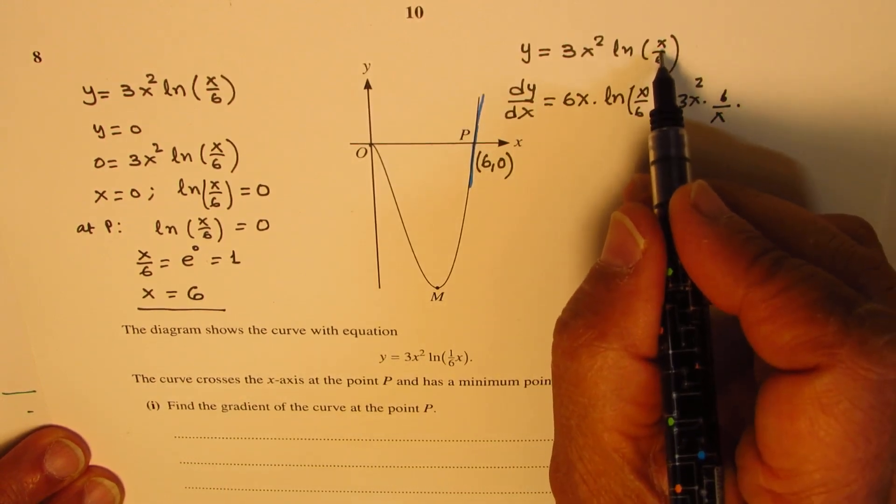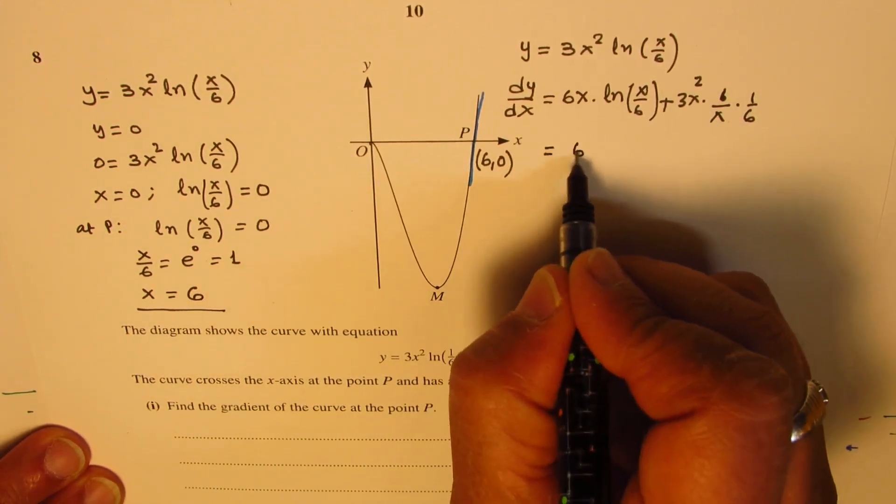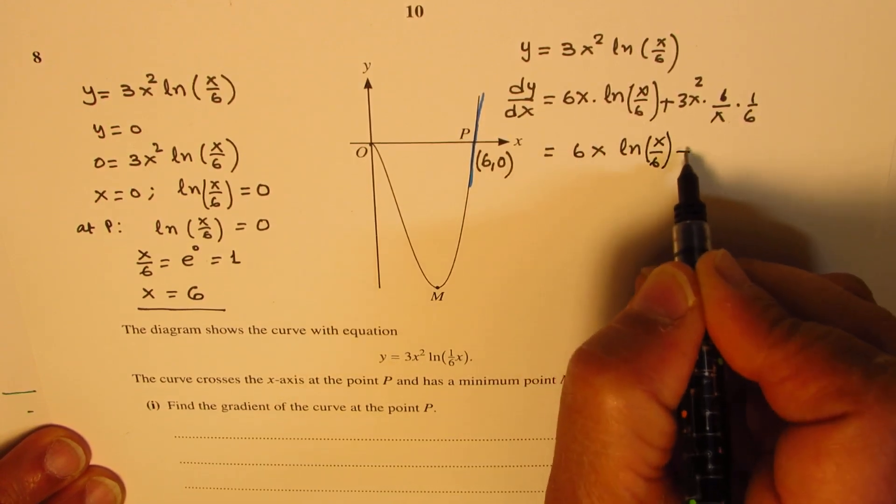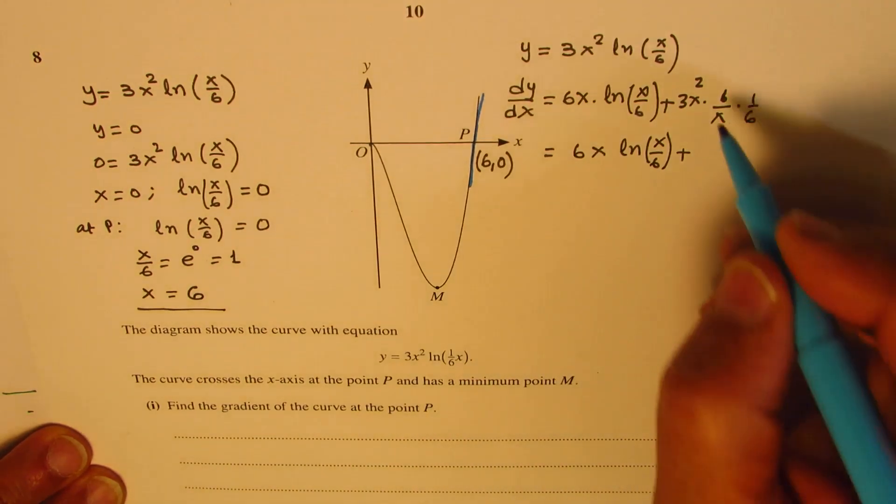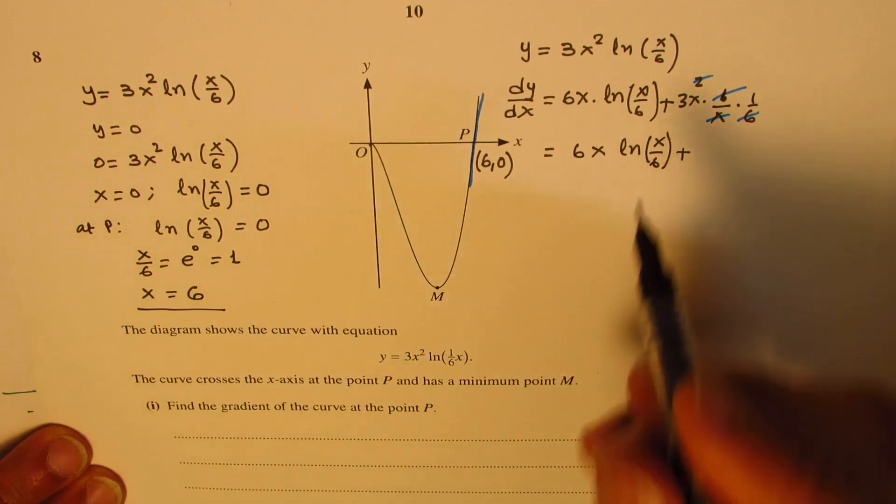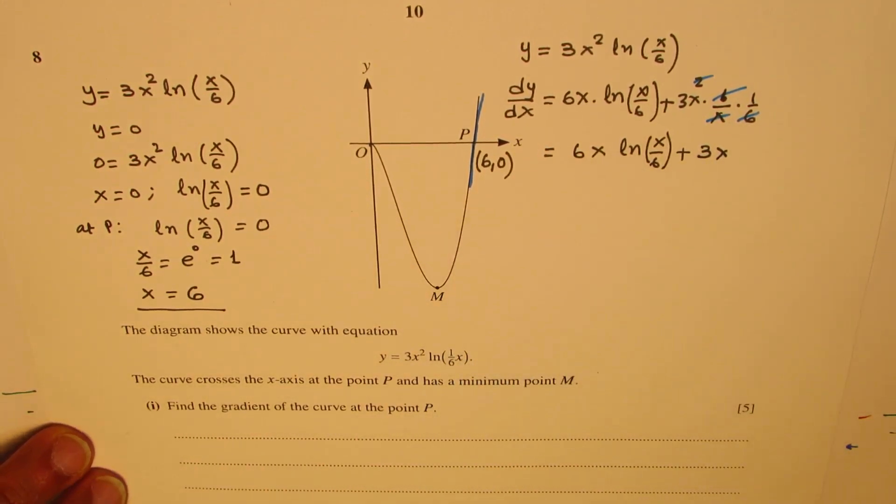Times the derivative of inside function, which is 1/6. So you could simplify and write this as 6x ln(x/6) plus, 6 and 6 cancel, and x and x cancel. So what you're left with is 3x here. So that becomes the derivative.